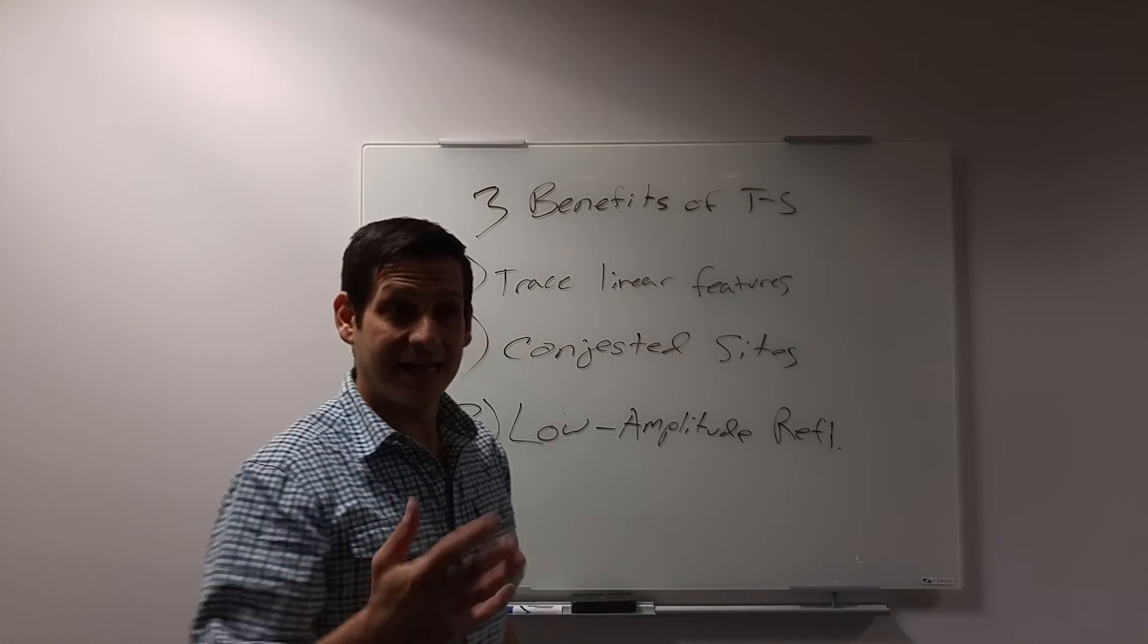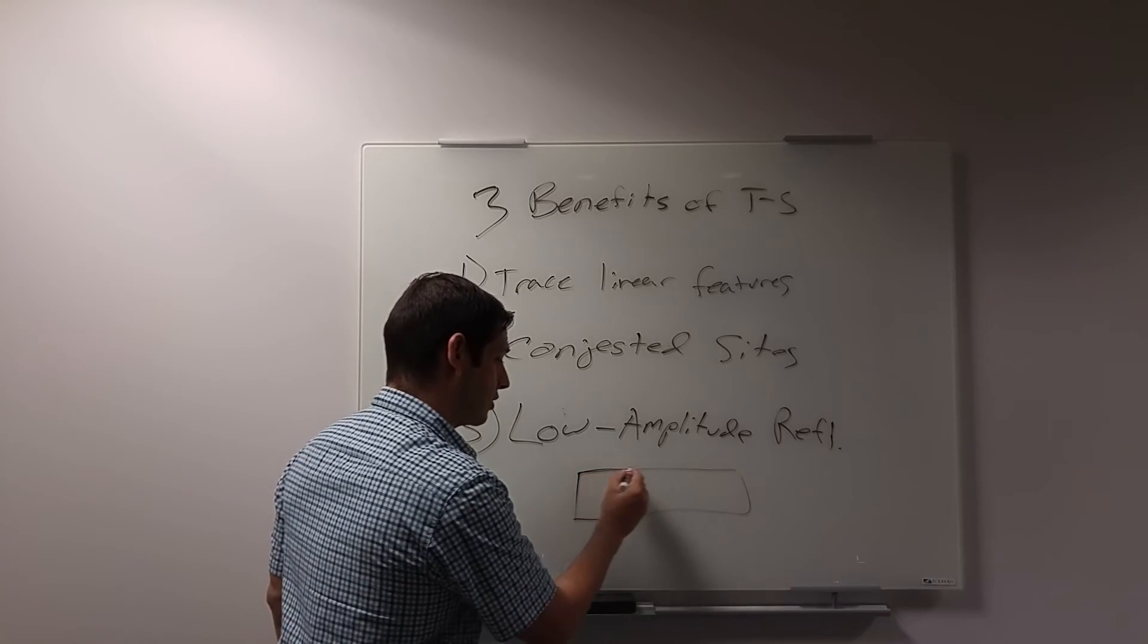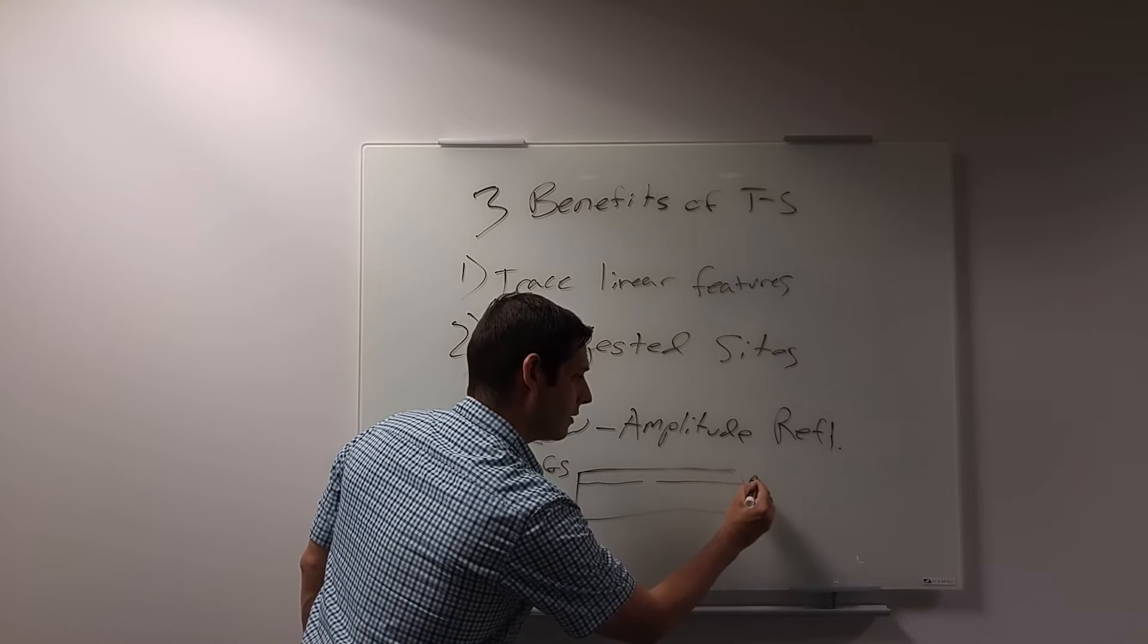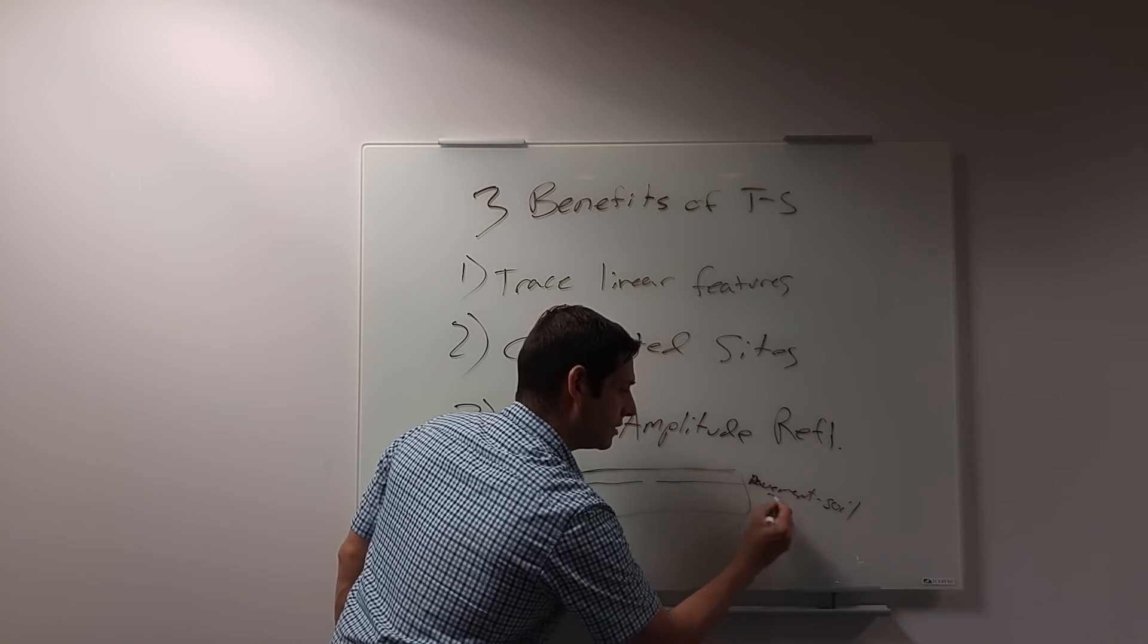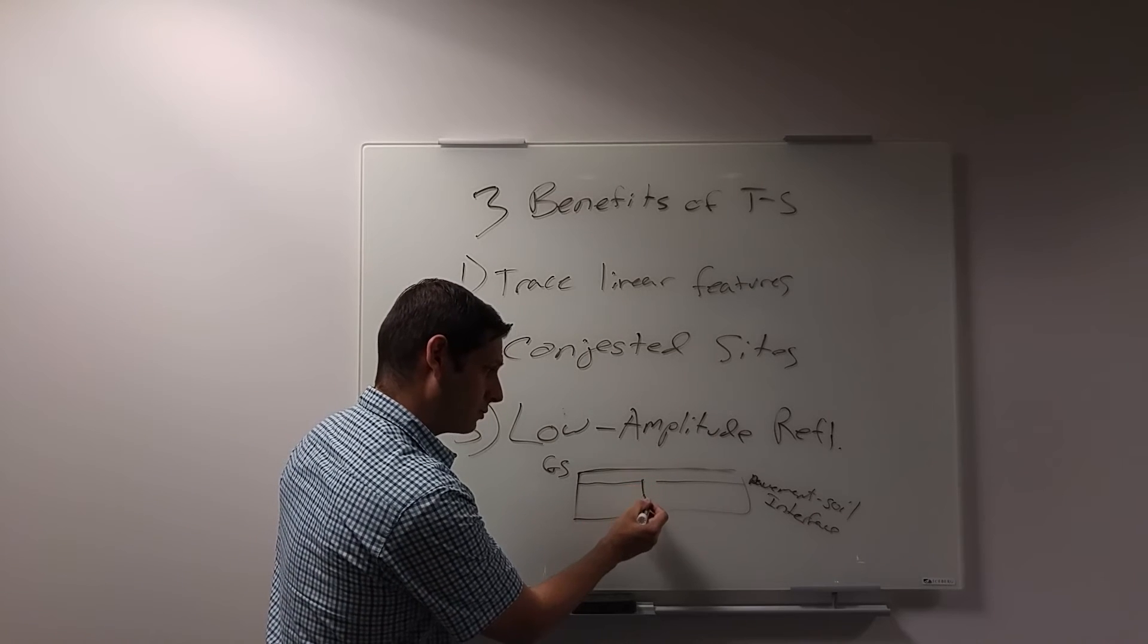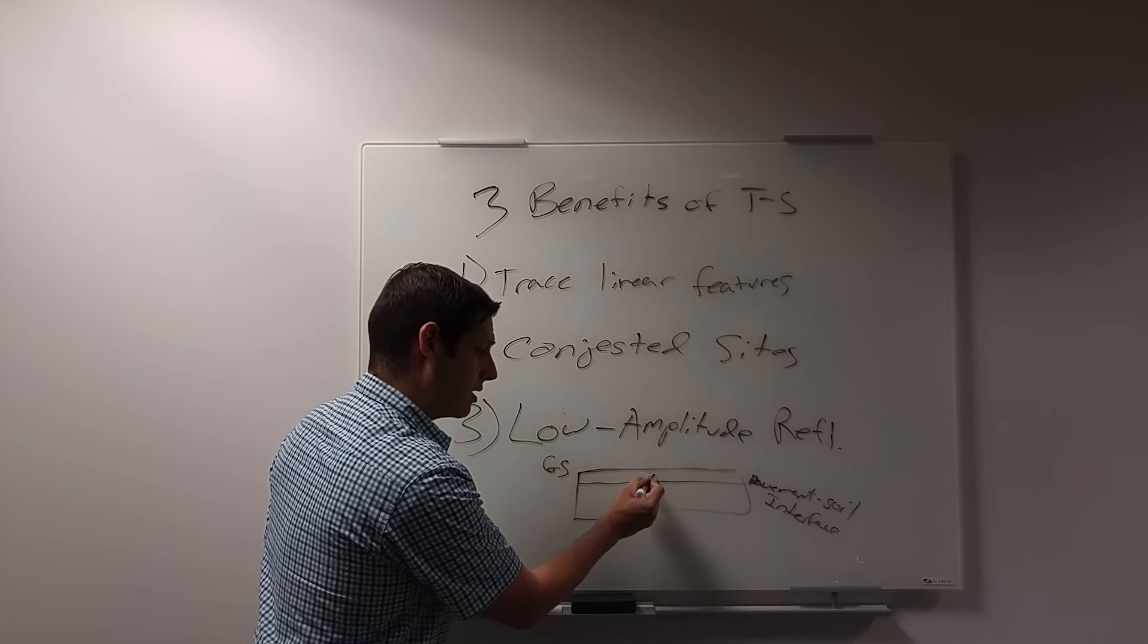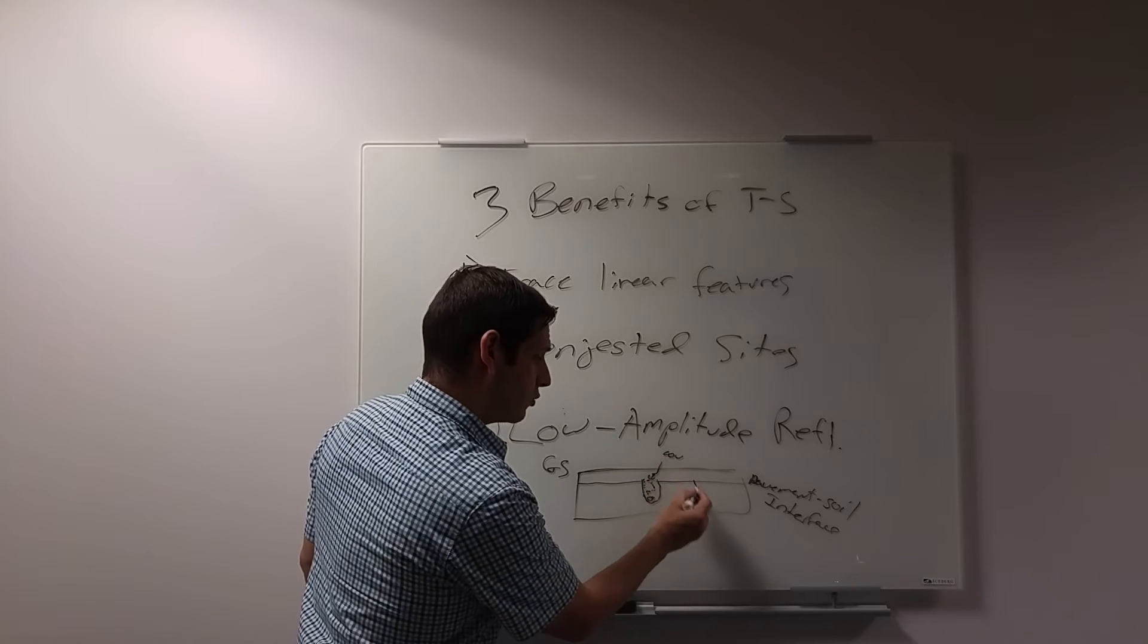What's a low amplitude reflection? Here's a profile, profile view. Here's the ground surface. Here is the pavement soil interface. And here is a trench with a pipe in it at the bottom. What's going to happen here? This soil is less consolidated. So what you might have here is a reflection, but it's going to be a lower amplitude, low amplitude, and this will be a high amplitude.